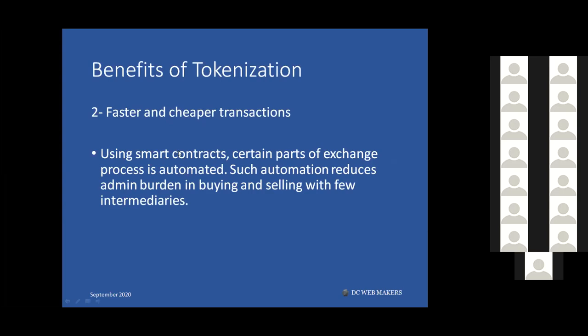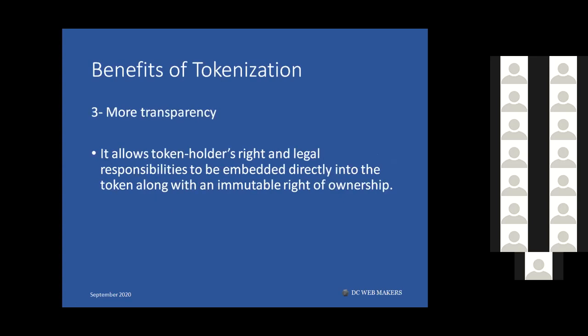Another benefit is faster and cheaper transactions. Using smart contracts, certain parts of the exchange process can be automated — putting conditions for triggering selling, reselling, and buying. This automation simplifies the process and makes interactions between buyers and sellers much easier, faster, and cheaper — especially for international or global transactions. You can also use cryptocurrency for those transactions instead of traditional banks.